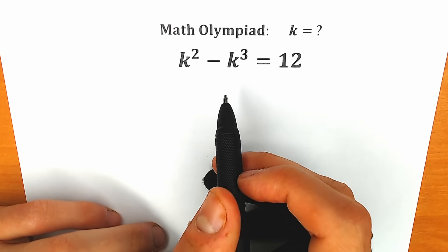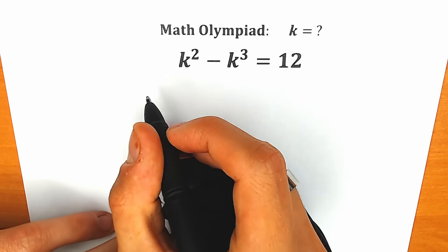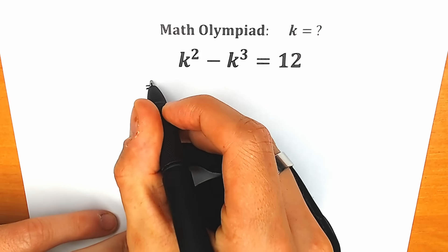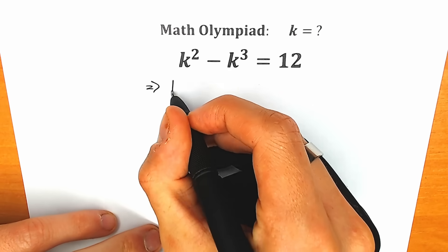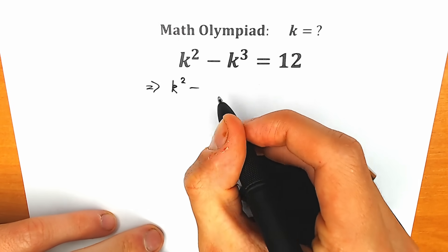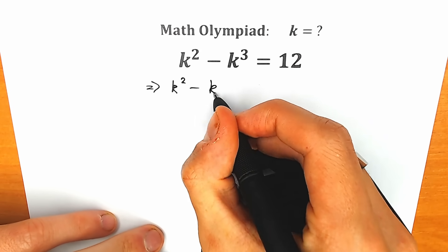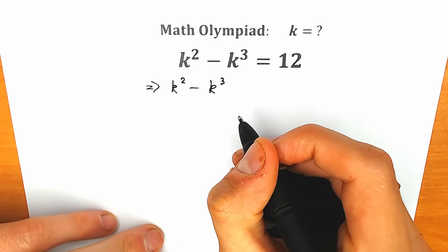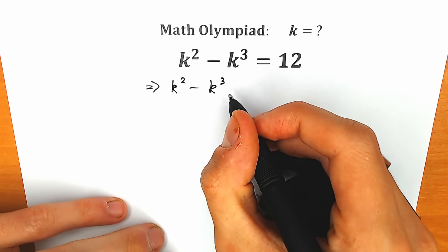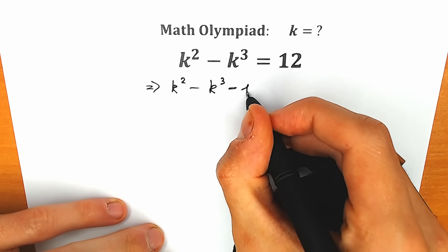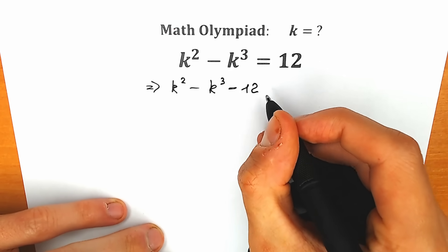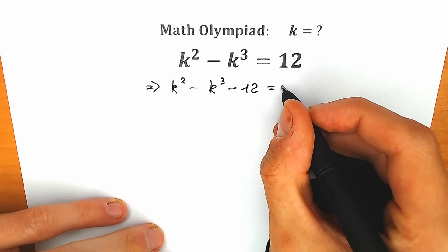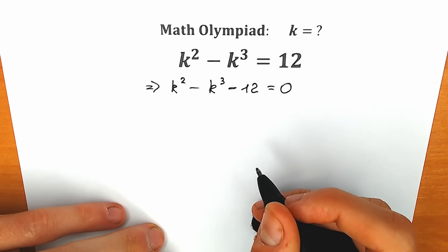First of all, let's subtract 12 from both sides. As a result, on the left side we have k-squared minus k-cubed minus 12, and on the right side minus 12, which equals zero.